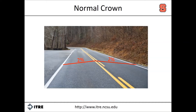A straight tangent roadway segment is typically designed with a normal crown for the purpose of providing sufficient drainage of water away from the roadway. The term normal crown is used to describe the type of cross slope and the percentage of the slope. Normal crown has a rooftop shape which peaks in the center of the roadway and falls away from the center line.